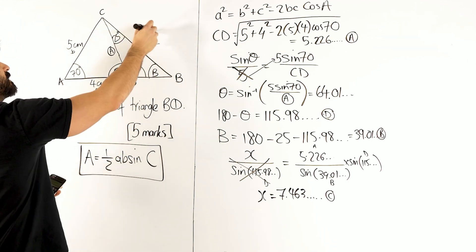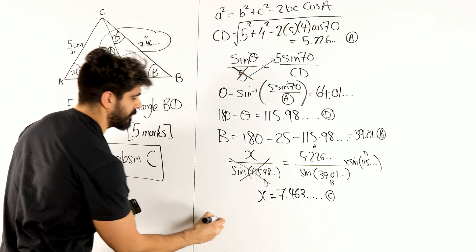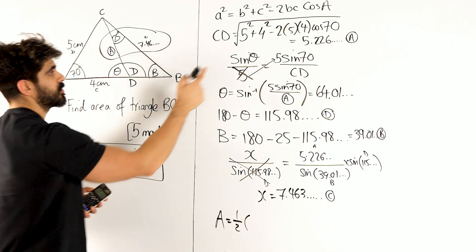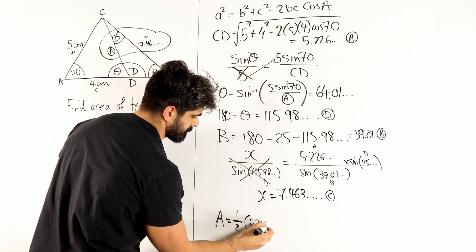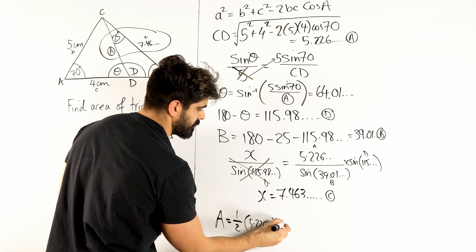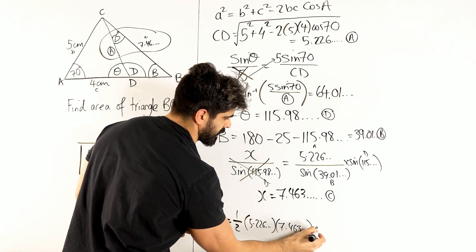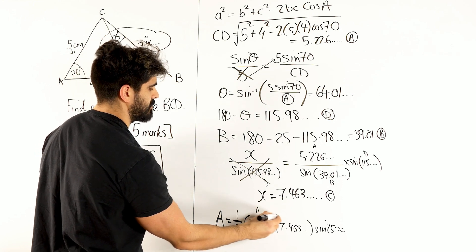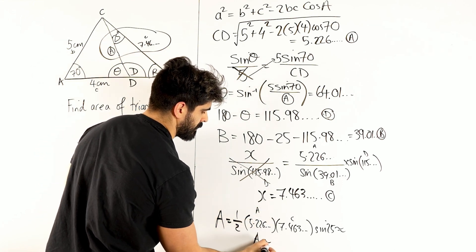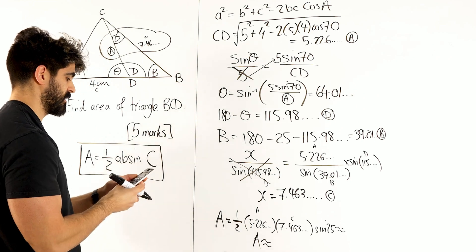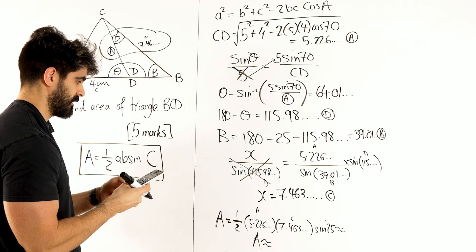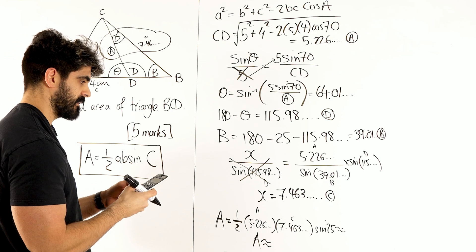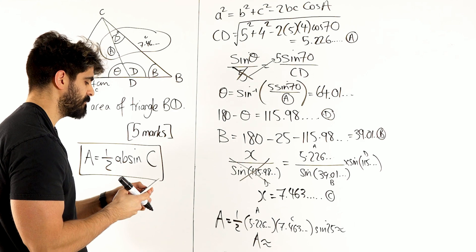Now we can do half AB sine C. So the area is: ½ × A × C × sine 25°, where A ≈ 5.226 and C ≈ 7.463, with angle 25° wedged between them. Doing ½ × alpha A × alpha C × sine 25°, we get 8.24.